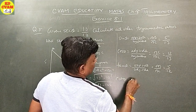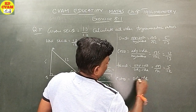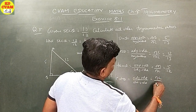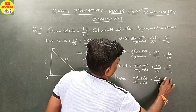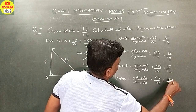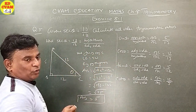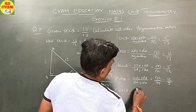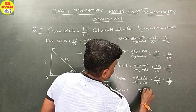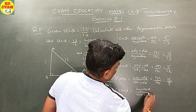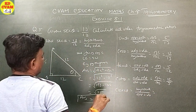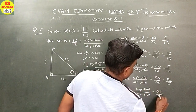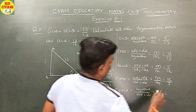Cot theta is equal to adjacent side upon opposite side, which equals BC upon AB. That is, 12 upon 5. Sec theta is already given as 13 upon 12. Cosec theta is equal to hypotenuse upon opposite side, which equals AC upon AB. That is, 13 upon 5.